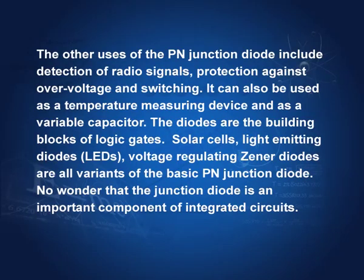Other uses of P-N junction diodes, apart from rectification, include detection of radio signals (which is also essentially rectification), protection against over-voltage, and switching. It can also be used as a temperature measuring device and as a variable capacitor. Diodes are the building blocks of logic gates. Solar cells, light-emitting diodes, voltage regulators, and zener diodes are all variants of the basic P-N junction diode. The junction diode is therefore an important component of all integrated circuits.